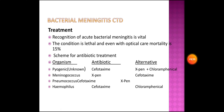Treatment of bacterial meningitis: culture and sensitivity should ideally be done, but empirical treatment must be started without waiting. For unknown cause, the antibiotic of choice is cefotaxime; alternative is ampicillin and chloramphenicol. For meningococcus, give ampicillin; alternative is cefotaxime. For pneumococcus, antibiotic of choice is cefotaxime; alternative is ampicillin. For Haemophilus influenzae, use chloramphenicol.